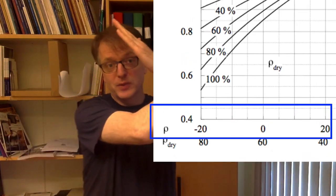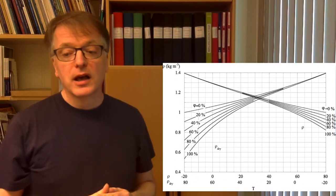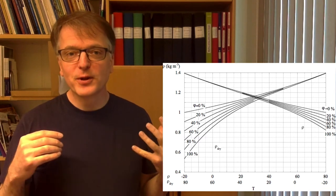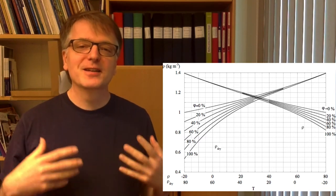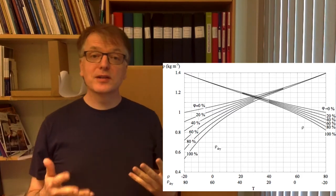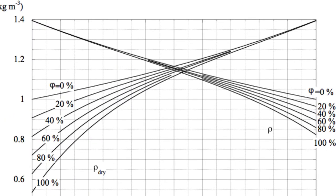We have a double x-axis, one for the dry density and one for the wet density. We also draw these lines for different relative humidities.